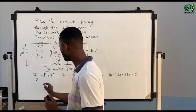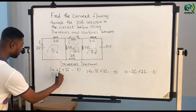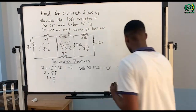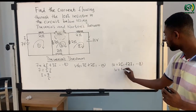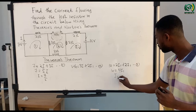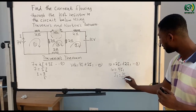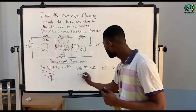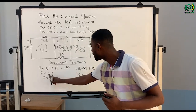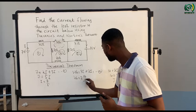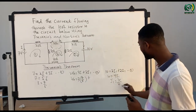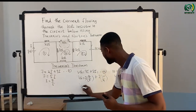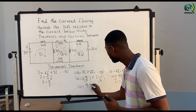In calculating Vth: Vth = 3I + 2I₁. Since I has been calculated as 7/5 and I₁ as 10/4, we substitute: Vth = 3 × (7/5) + 2 × (10/4). This gives us Vth, the Thevenin equivalent voltage, equal to 9.2 volts.